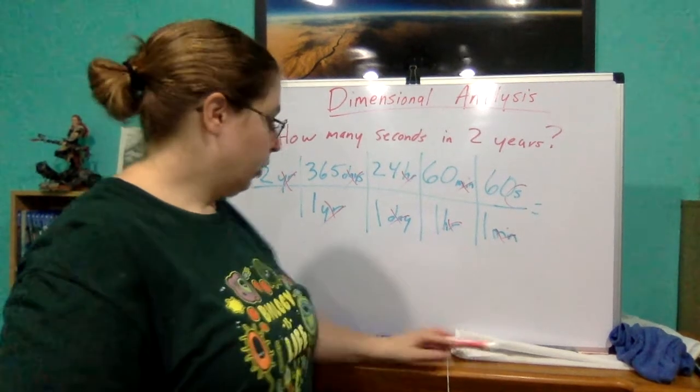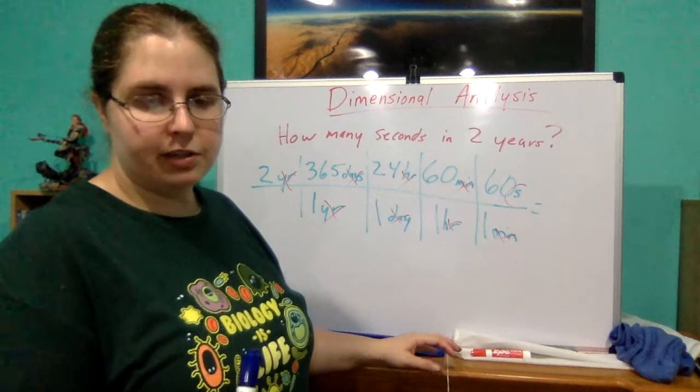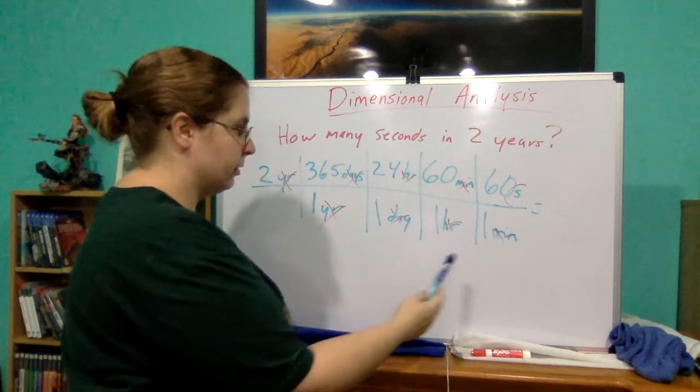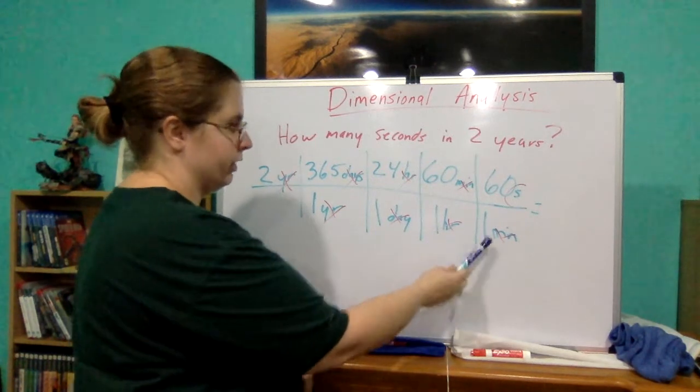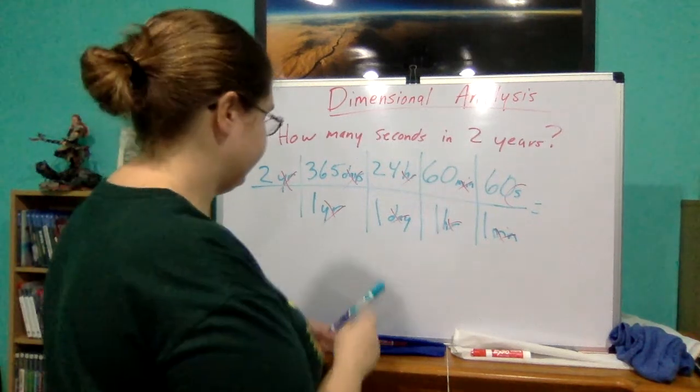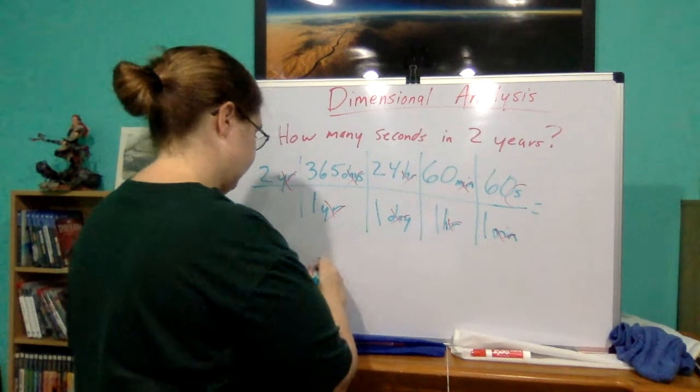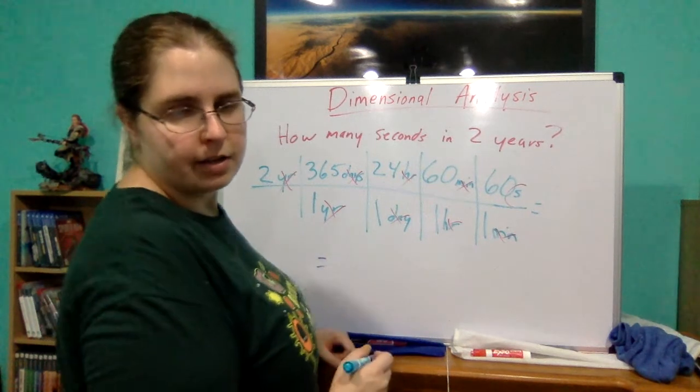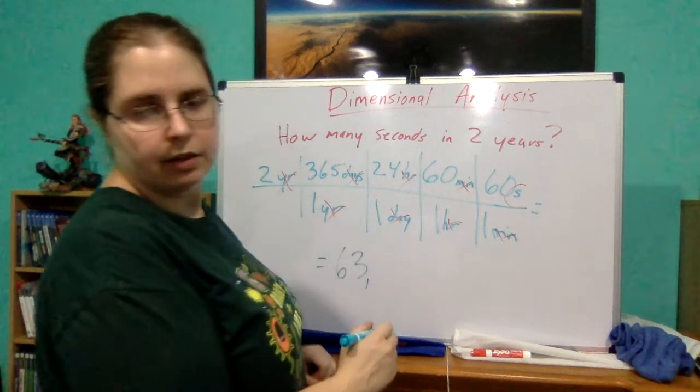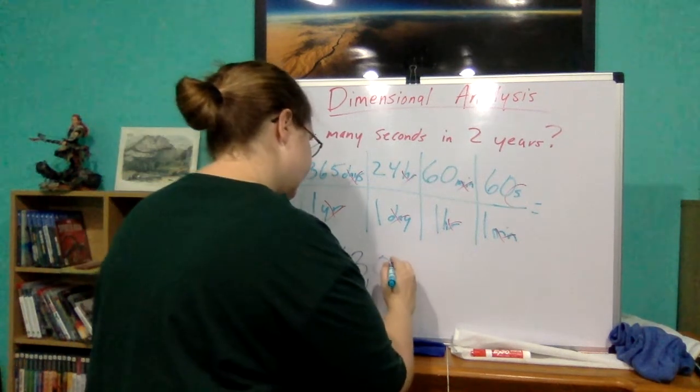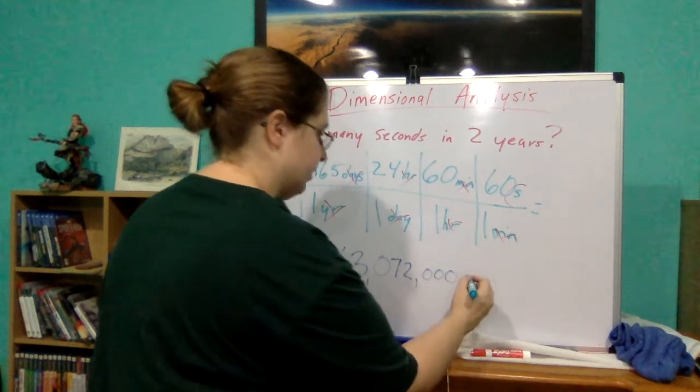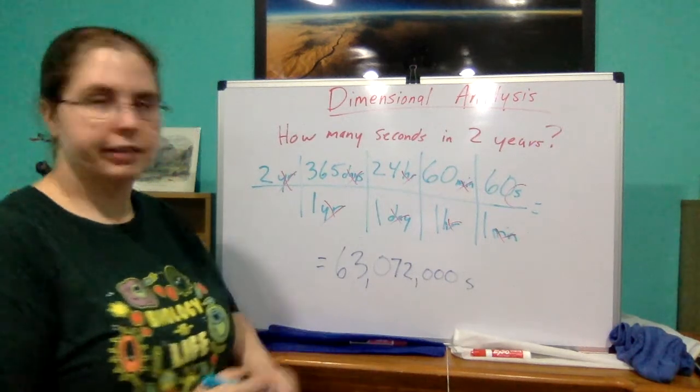So when we go through, we multiply this straight across, and then we're going to multiply these numbers across, divide them by these numbers at the bottom. So one times one times one times one equals one. It's going to be whatever the top is, divide it by one.